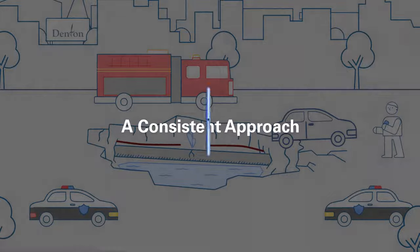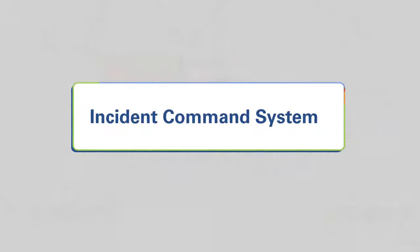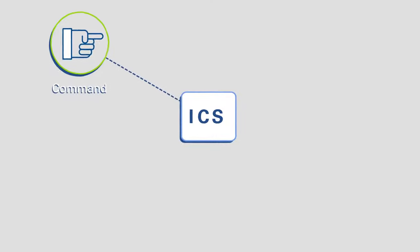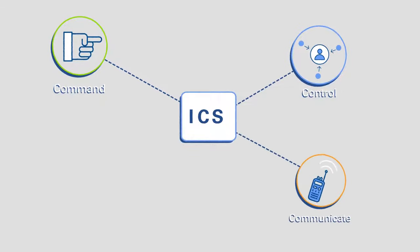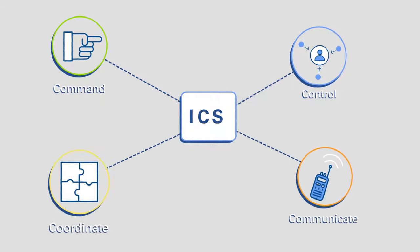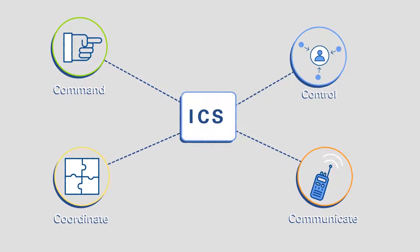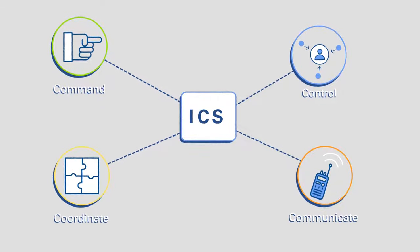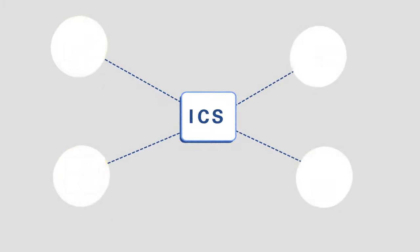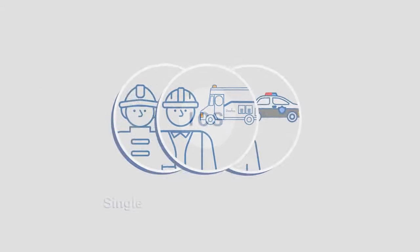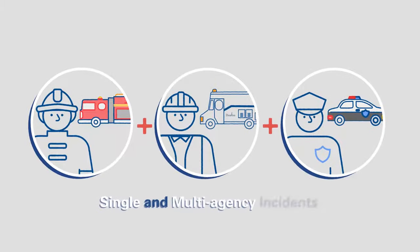The Incident Command System, or ICS, is used to command, control, clearly communicate, and coordinate emergency response. It's used around the world as an effective means for managing single and multi-agency incidents.